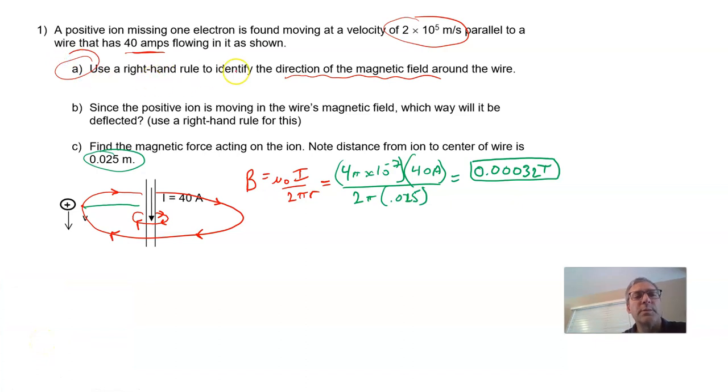Question B. Use a right hand rule to identify the direction of the field. Check, we've done that. Since the positive ion is moving in the wire's magnetic field, which way will it be deflected? Use a right hand rule.